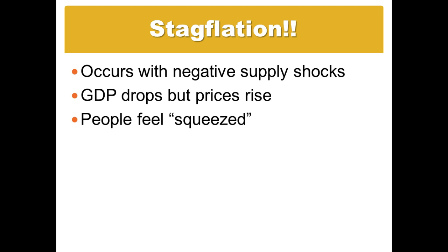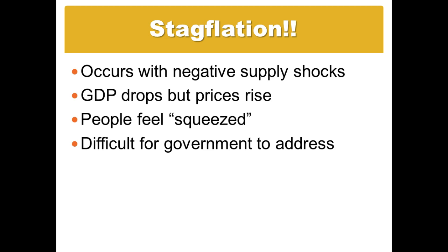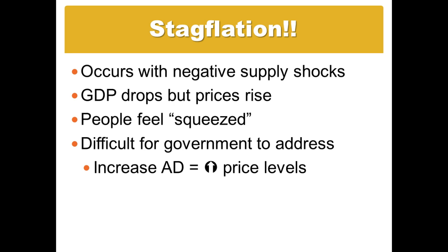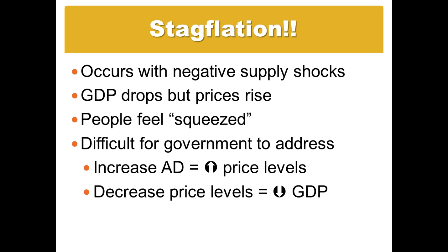In this special case, there's nothing the government can do that will solve both the problem of stagnant growth and inflation simultaneously. If they choose to increase aggregate demand to address shrinking GDP, they'll improve GDP but at the cost of higher price levels. If the government decides to deal with rising prices by reducing aggregate demand, all they manage to do is continue to shrink GDP. This is why governments try to avoid stagflation — there's not much they can do to solve it.